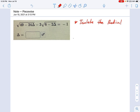I like to deal with the more complicated one first, so let's do that. The square root of 49 minus 24 delta equals... I'm going to add this one to the other side... equals 3 radical 6 minus 2 delta minus 1.